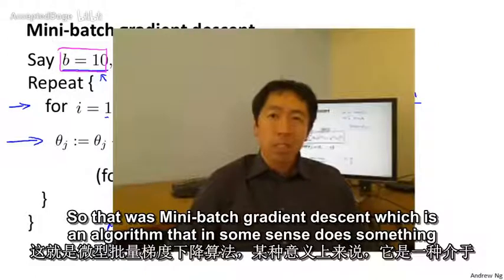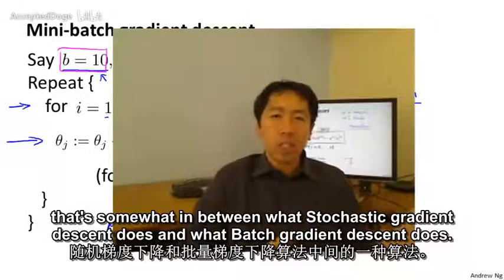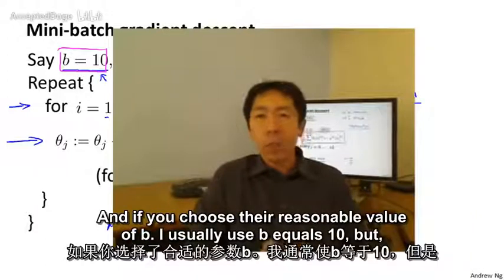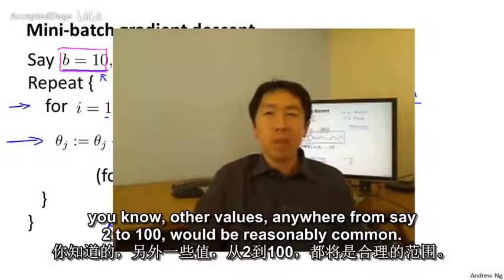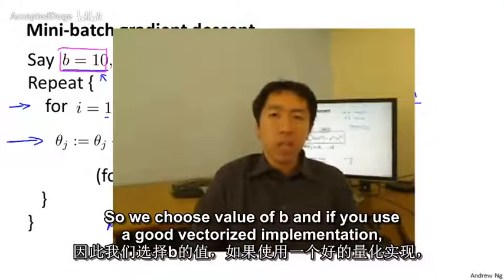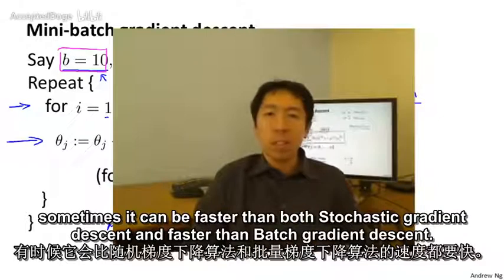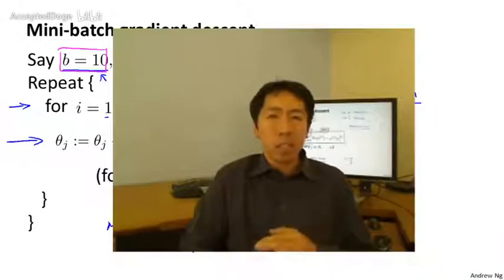So that was mini-batch gradient descent, which is an algorithm that in some sense does something that's somewhere in between what stochastic gradient descent does and what batch gradient descent does. And if you choose a reasonable value of b, I usually use b equals 10, but other values anywhere from say 2 to 100 would be reasonably common. So if you choose a good value of b and if you use a good vectorized implementation, sometimes it can be faster than both stochastic gradient descent and faster than batch gradient descent.